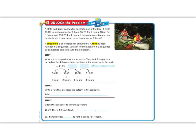Let's begin by reading the Unlock the Problem. It says, a state park rents canoes for guests to use at the lake. It costs $5 to rent a canoe for one hour, $6.75 for two hours, $8.50 for three hours, and $10.25 for four hours. If this pattern continues, how much should it cost Jason to rent a canoe for seven hours? So let's go ahead and underline our question.